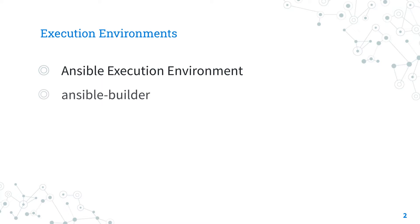The creation of Ansible execution environments is performed by the Ansible Builder tool. Ansible Builder produces a directory that acts as a build context for the container image build, containing the container file along with any other files that need to be added to the image. Execution is performed by the Ansible Runner tool, which enables you to run the execution environment as a container on the current machine, taking care that the content runs as expected.